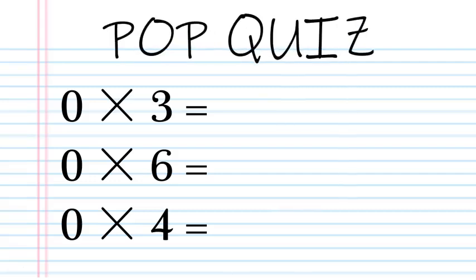Pop quiz! Zero times three is zero threes, that means it's just zero. Remember, anything times zero is zero. So zero times six: zero. Zero times four: zero.